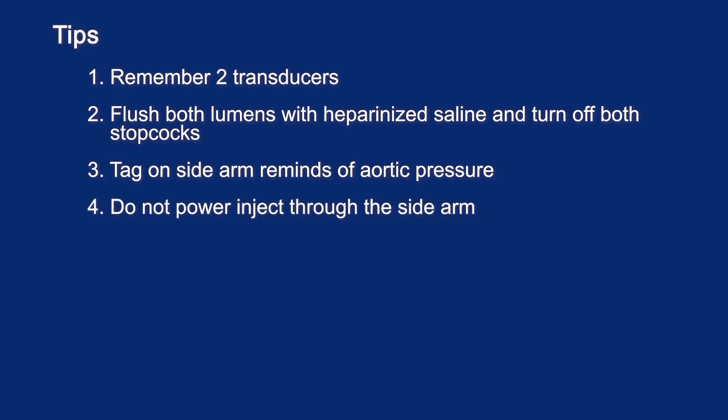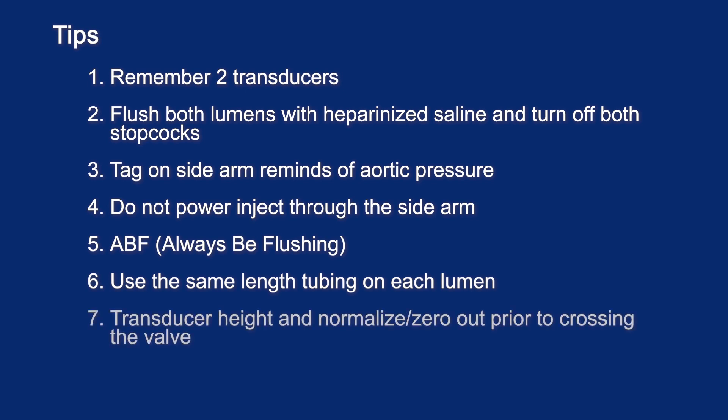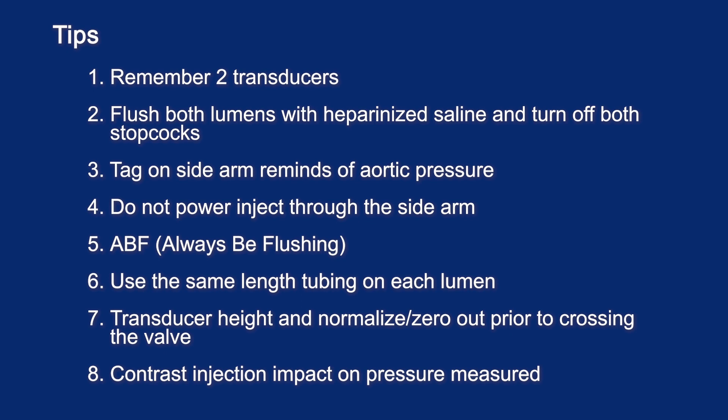Do not use the outer lumen for the delivery or infusion of diagnostic, embolic, or therapeutic materials, or to perform pressure injections of contrast medium into the vascular system, as such pressure injections could result in device damage and inaccurate pressure readings — the tag on the sidearm provides a reminder. Be sure to watch for air bubbles in the line and flush to eliminate them. Make sure you are using the same tubing on each lumen, as improper setup can affect accuracy. Transducers should be placed at the same height and at the same distance to the heart. The catheter should be normalized and zeroed out prior to crossing the valves to ensure both lumens are measuring at the same level before taking pressure measurements across the valve. Be aware that contrast can impact the pressure measured — if you take an LV angiogram before pulling back, this may impact your pressure readings. Make sure to flush after all contrast injections.